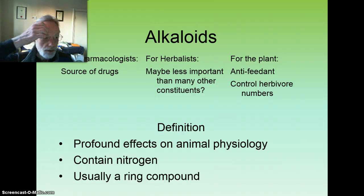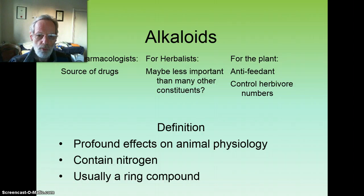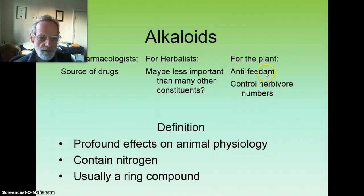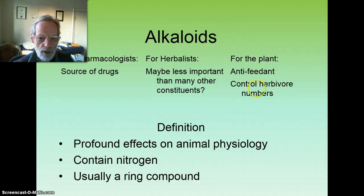Finally, let's have a brief look at alkaloids. These are the secondary metabolites that historically the pharmaceutical world has been most excited about because of their sometimes profound effects on animals. Herbalists find alkaloids less important than many other constituents nowadays, particularly with regard to using whole plant extracts with their synergistic blend of compounds. For the plant, alkaloids serve to protect from herbivory — the bitter taste puts off insects and other herbivores, and in the longer term, alkaloids reduce the threat from herbivores by killing them or interfering with their reproduction.